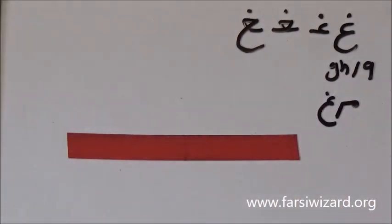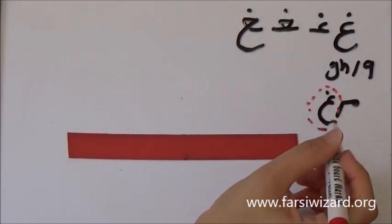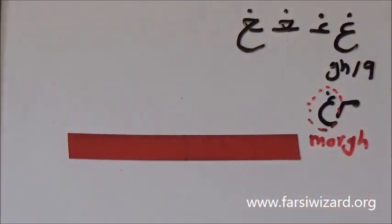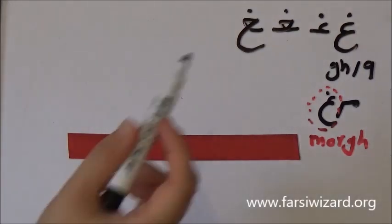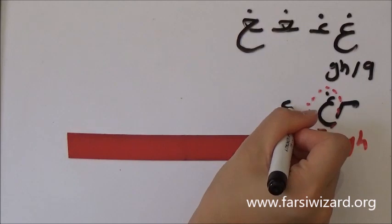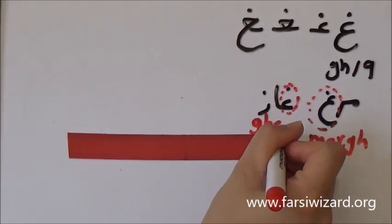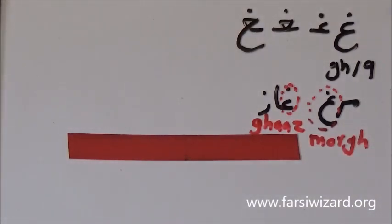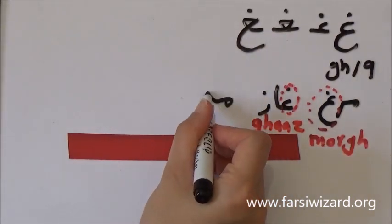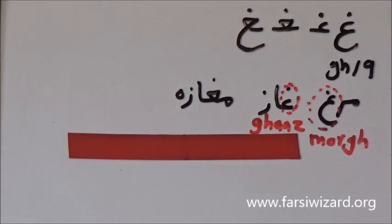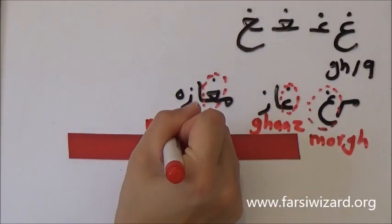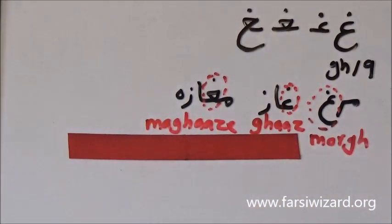Let's look at some examples. We have the word MORQ, which means hen or chicken. Now if this letter appears at the beginning of a word, like QAZ — which means goose, another bird — we have to write it in its short form, so QAZ. As you can see, the letter looks kind of cut because it has come at the beginning of a word. When this letter comes in the middle of a word, for example we have MAQAZ, which means shop — we borrowed it from the French word magazine. MAQAZ is written with that version of GAYN that looks like a triangle with a dot on top.